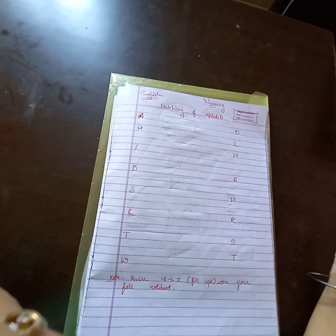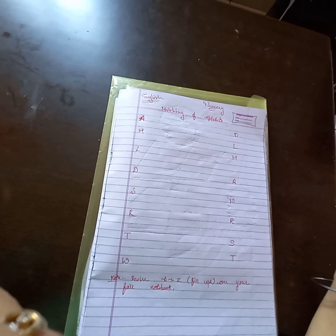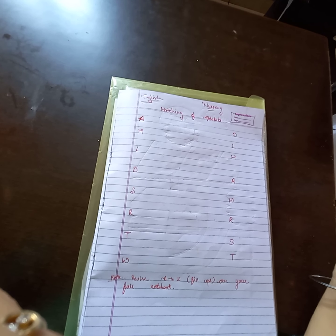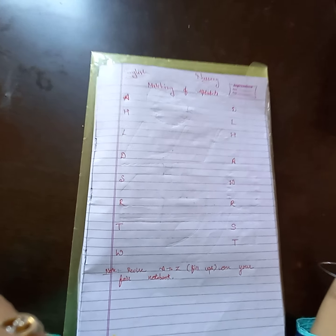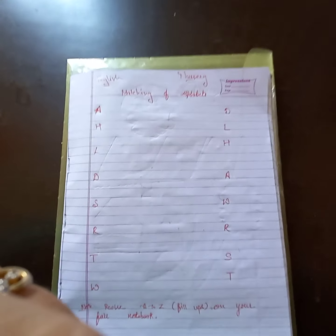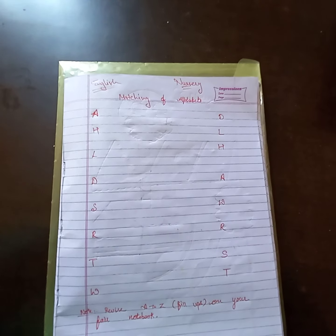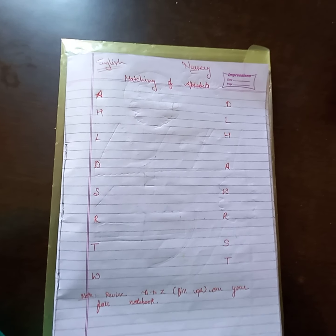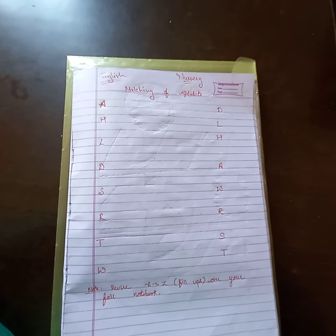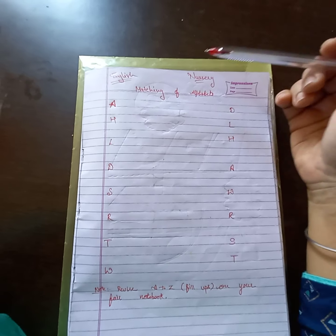Alphabets kohon se hote hai? A to Z — A, B, C aapko aati hai na? Toh hoon se khette hai alphabets, okay? So let us start.